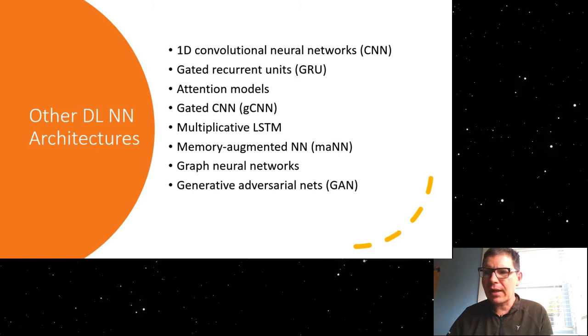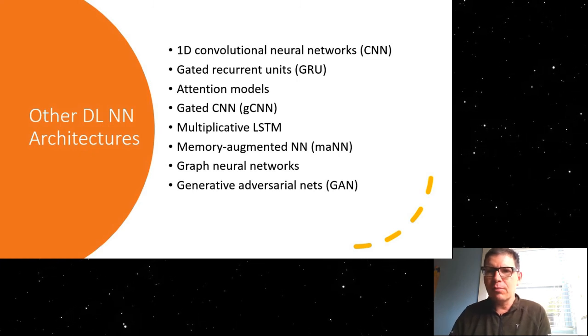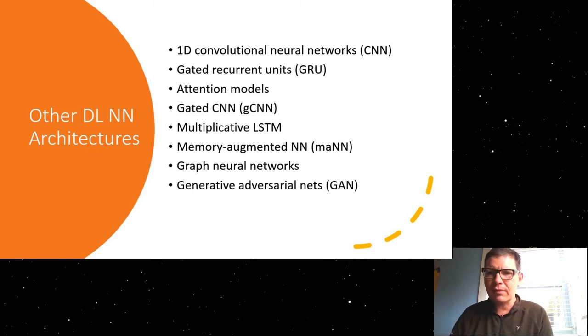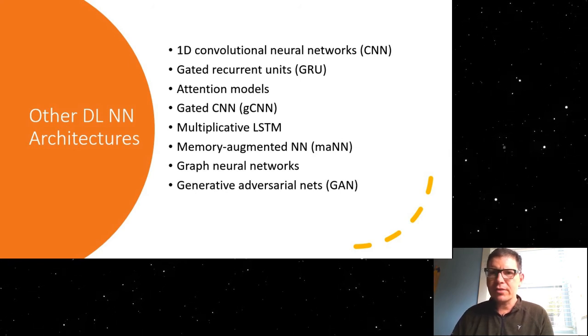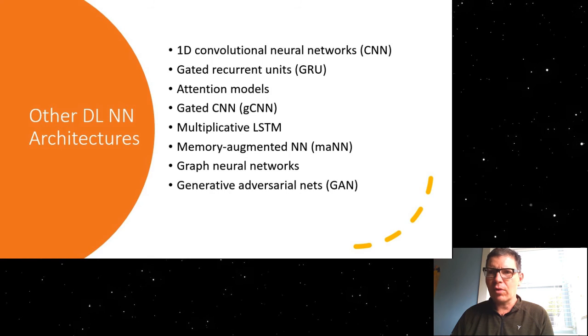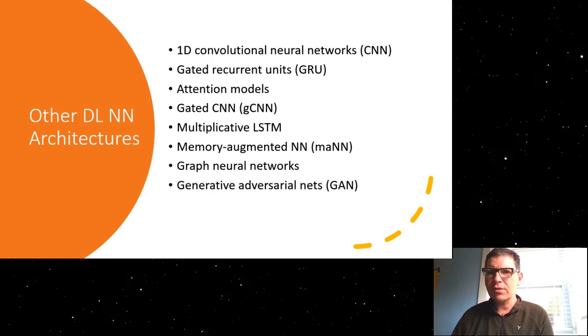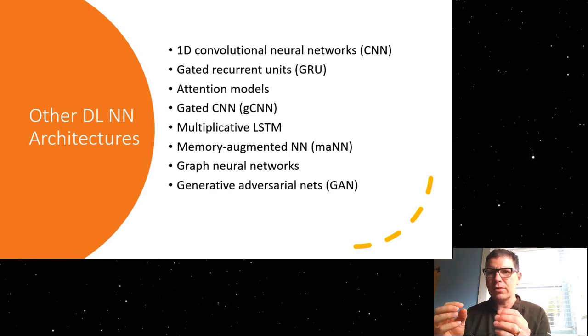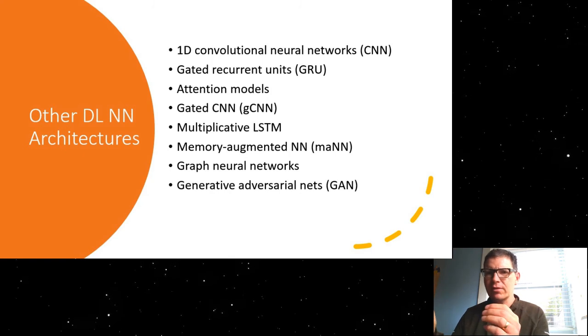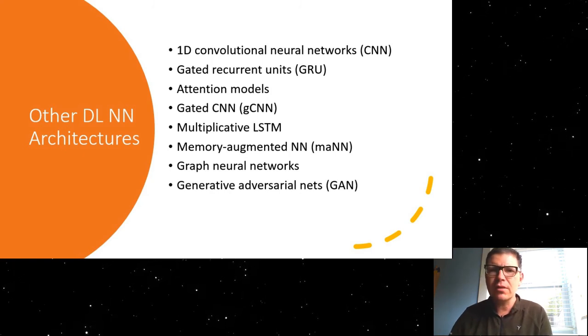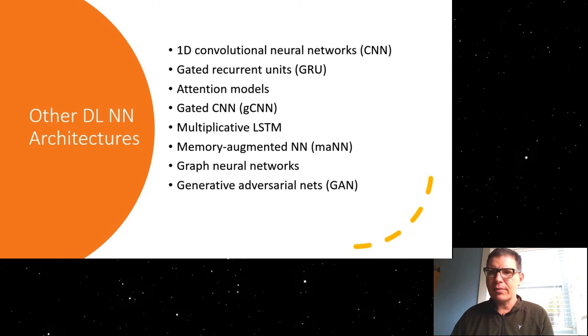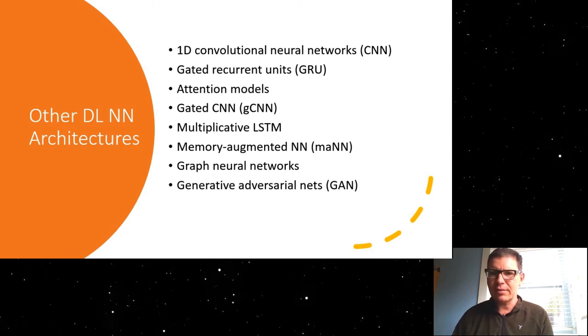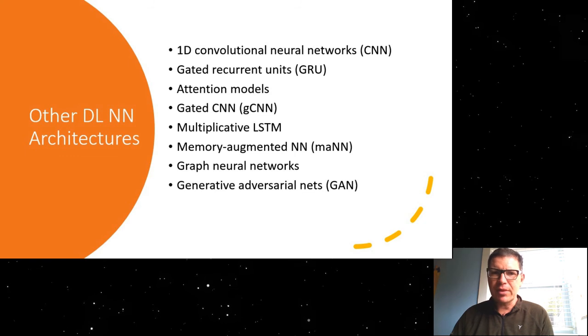Now, in the meantime, the field has matured, and it is moving very quickly, and people have played around with a lot of different neural network architectures. One of the more promising ones seems to be convolutional neural networks, so we use one-dimensional convolutional neural networks because we're talking about sequences here. That's been shown very promising, but people have essentially looked at just about everything that might be applicable here.